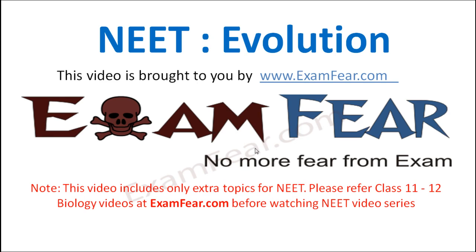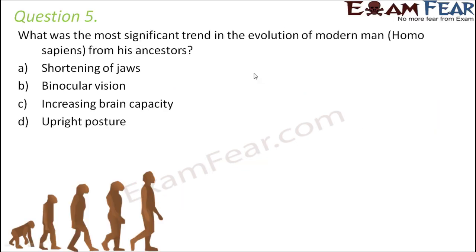Hello friends. This video on NEAT evolution is brought to you by examfear.com — no more fear from exam. Question number 5: What was the most significant trend in the evolution of modern man, homo sapiens, from his ancestors? If you look at the entire evolution of modern man, you would see that there were a lot of changes which had taken place over a period of time. The most significant trend was, of course, the increasing brain capacity.